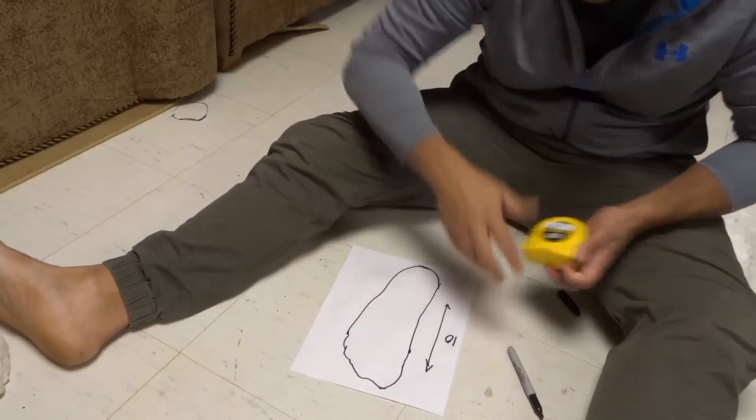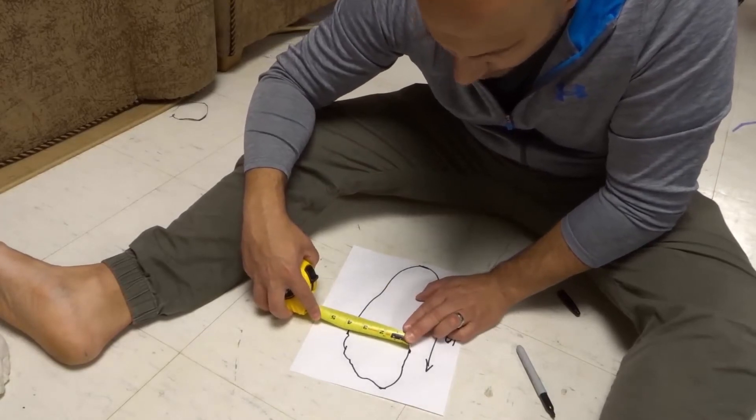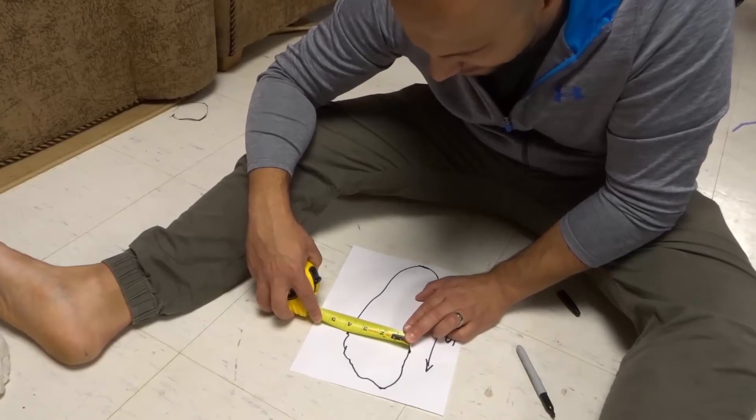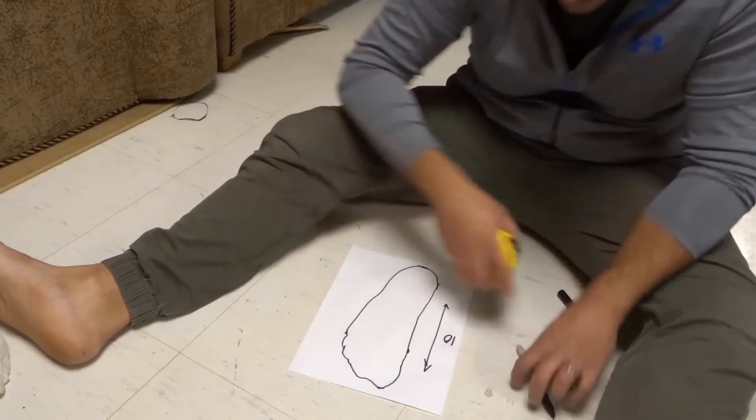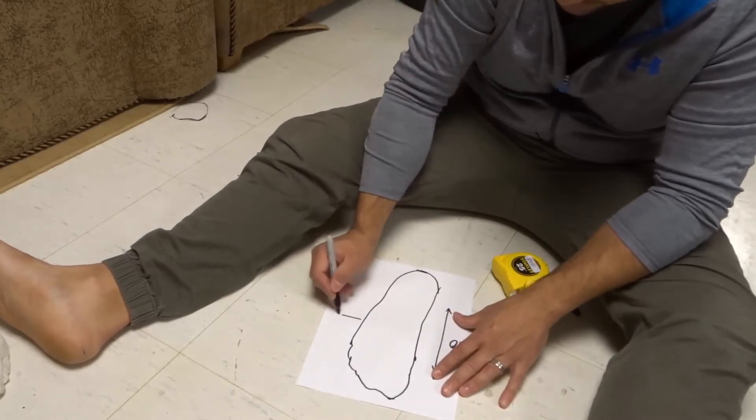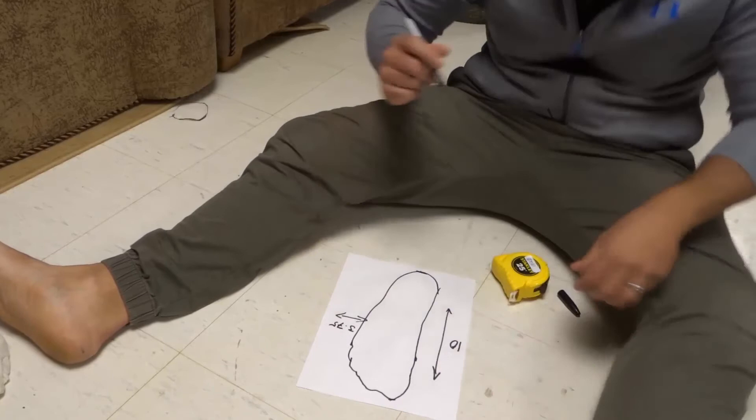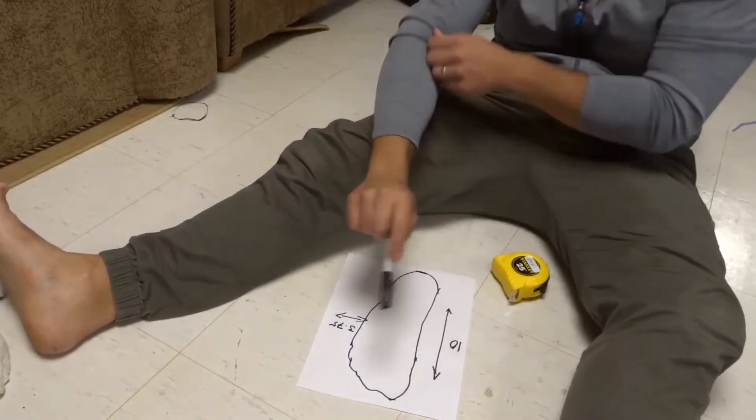So what I'm going to do now, place the marker to the side and measure the distance at the widest part of the foot from one side to the other. And mine is actually going to be 3 and 3 quarters of an inch, so 3.75 inches from one side to the other.